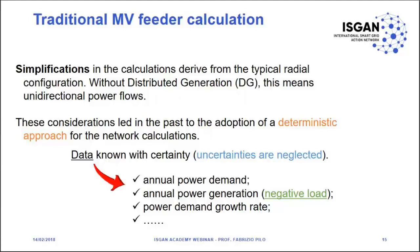Some simplifications in calculations can be assumed because of the typical radial configuration, but with distributed generation these assumptions are no longer valid — because with distributed generation we don't have unidirectional power flows. In the past, and actually still today, we use a deterministic approach for network calculations, assuming we know the data without any sensitivity: the annual power demand, annual power generation, demand growth rate, and so on.